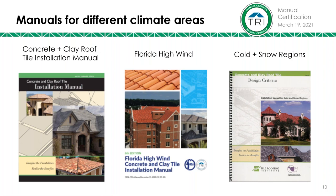One of the questions we constantly get is about our manuals and why they're different from any other industry manuals. We originally started out knowing that tile goes down in a lot of places, predominantly the sunbelt. But one early focus was cold and snow regions. We know from Europe, especially in the heavier, colder areas of Sweden and Germany, where tiles have gone on forever, that tile does a better job than any other roofing product in those conditions.